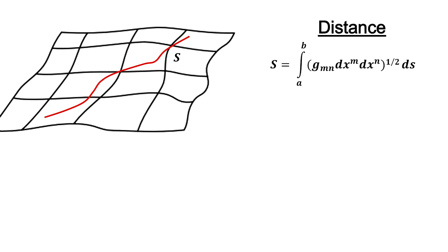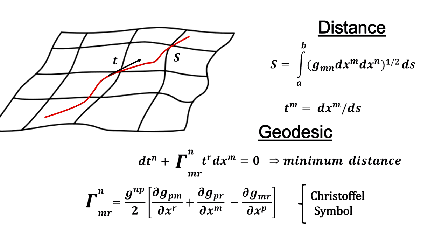With the metric tensor, we can measure distances between any two points by adding up all the small distances along the way. Taking the formula and finding its minimum is an exercise in calculus that gives us the shortest distance. These are the geodesic lines.